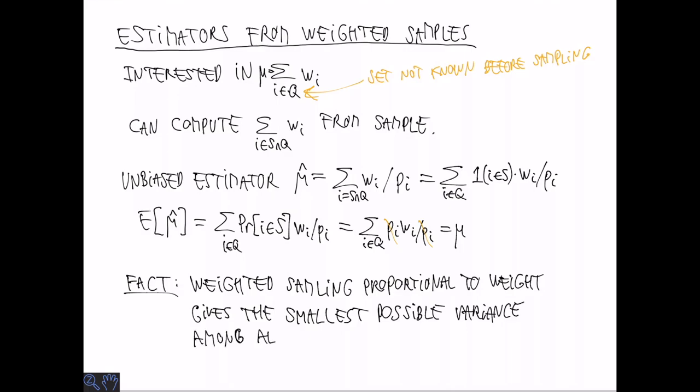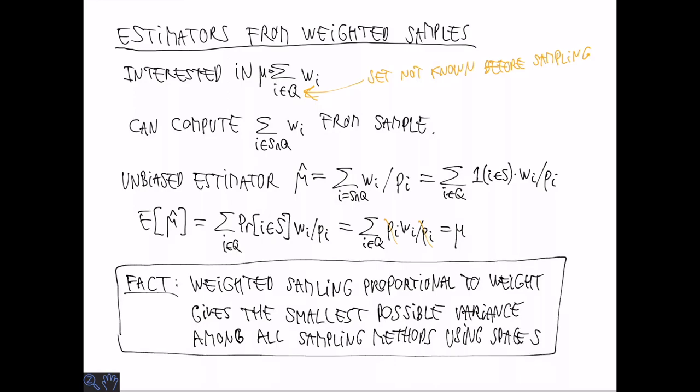An important property of weighted sampling is that it gets the smallest possible variance among all sampling methods that use space s. The estimator that divides by the sampling probability is also known as the Horvitz-Thompson estimator, and it is an old technique from statistics. In the book, it is described how one can do efficient updates and merges of samples that are weighted. Details are a bit complicated, so I refer to the book for those.